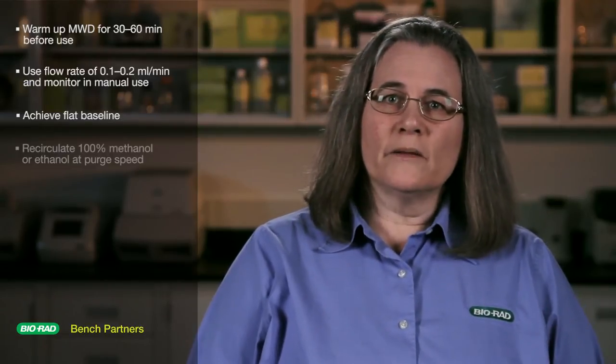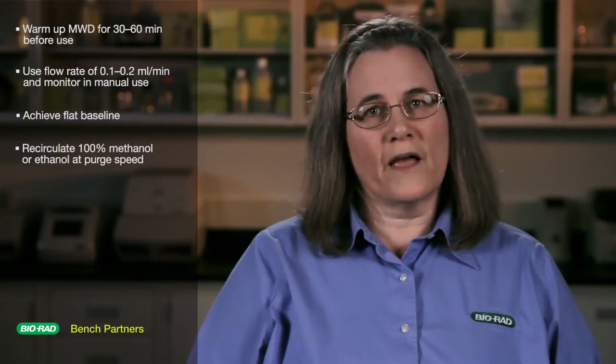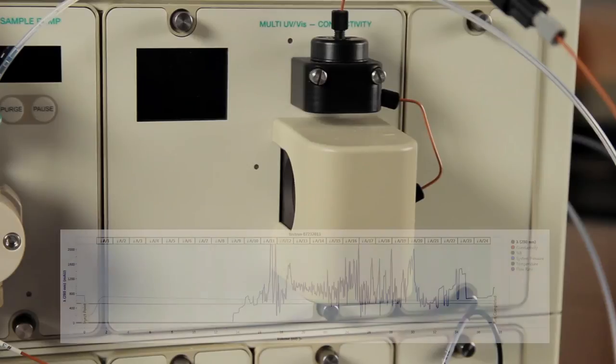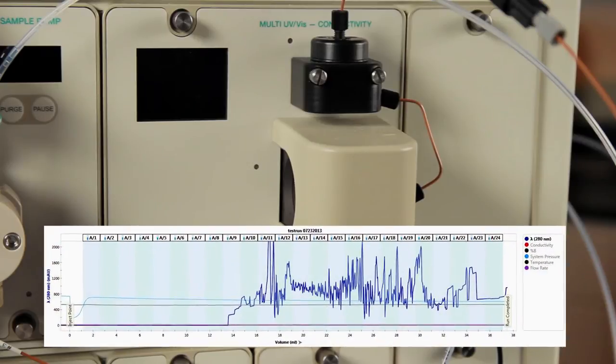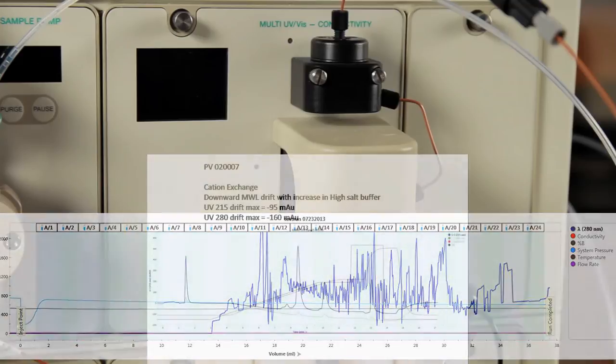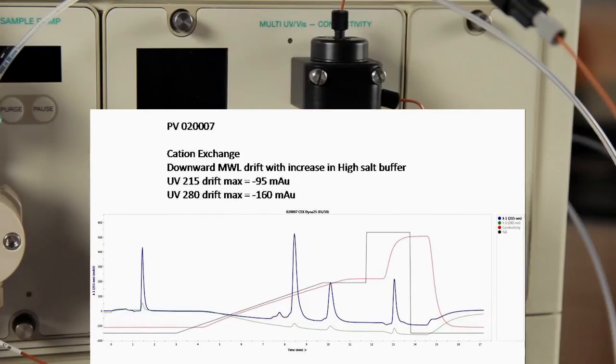Take any columns out of line and recirculate 100% methanol or ethanol through the system at purge speed. If the problem persists, it's very likely that air bubbles are trapped in the flow cell, causing the baseline to show a steady downward drift or even sharp spikes in the UV trace.